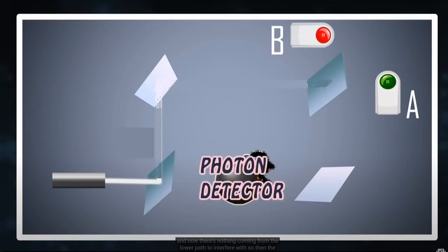The bomb is a photon detector on the lower path. The photon was split and took both upper and lower paths toward detectors A and B. There are three possible scenarios.